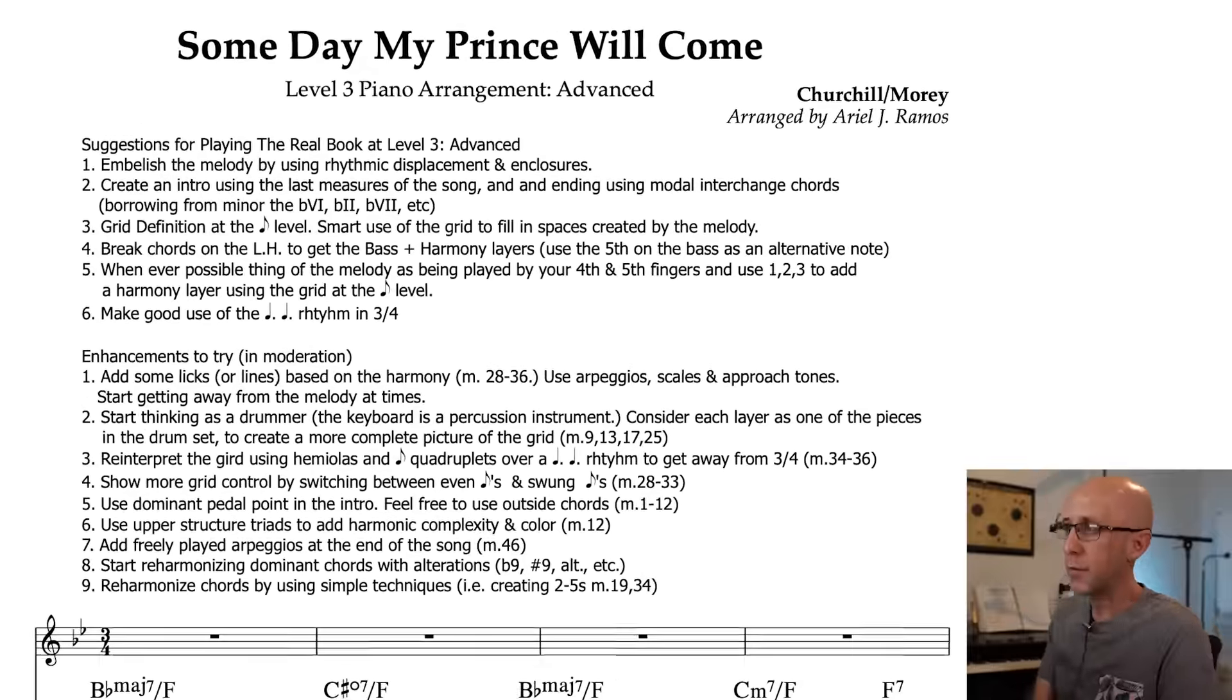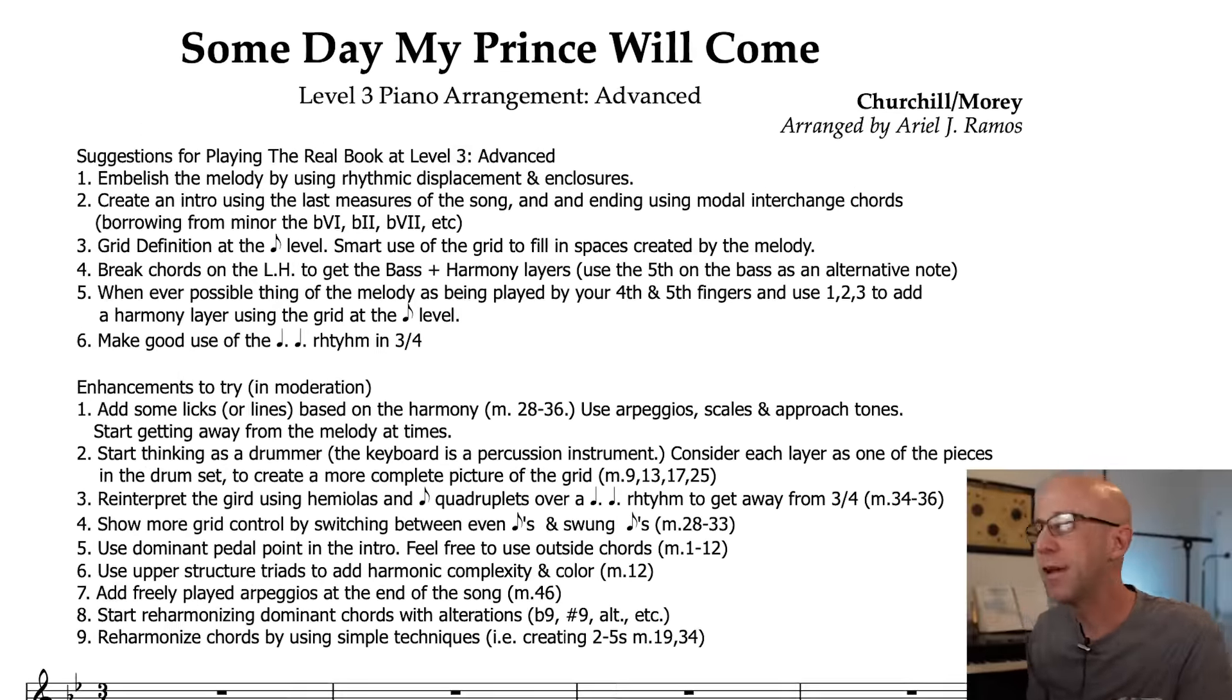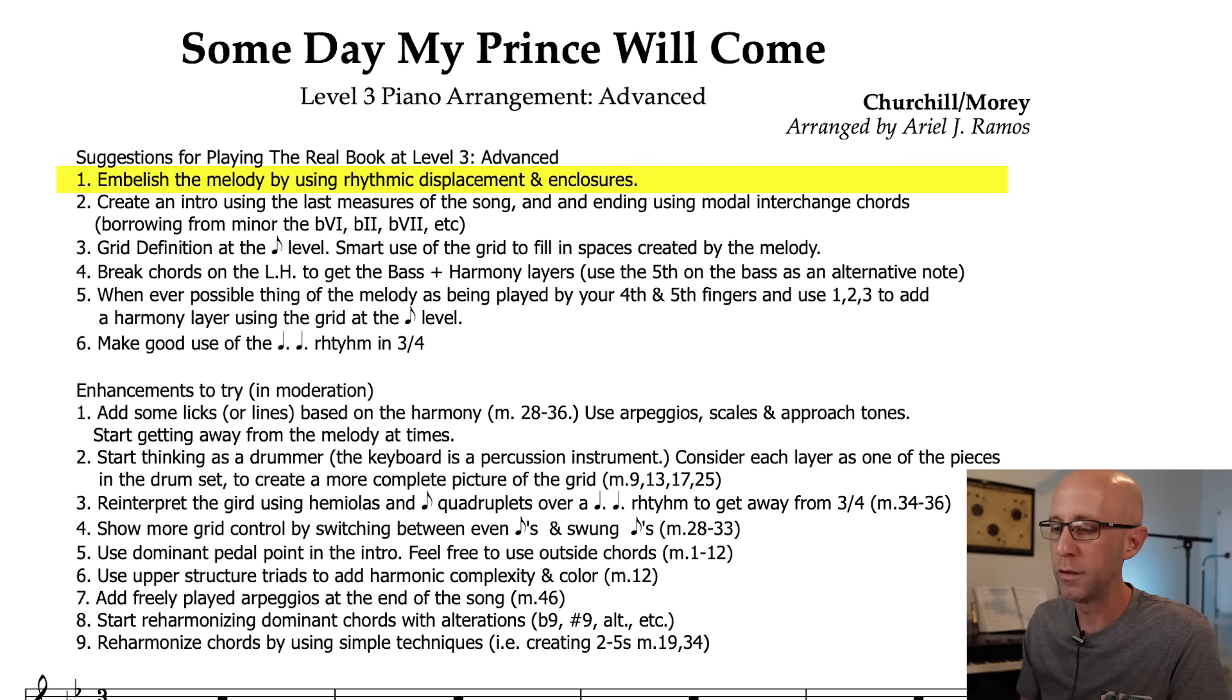As you can see at the top of the page here, we have some suggestions for playing at the level 3 level. We're going to be embellishing the melody more, you're going to maybe see some more enclosures. Again, we're still building off the techniques we used in level 1 and level 2, so you're still going to see those and some other things peppered in as well. Things like creating an intro and an outro, and using modal interchange chords to do so. We're going to further define our rhythmic grid down to more of an eighth note subdivision. Last time we talked about using more of a quarter note pulse to define our grid. Now you're going to see that kind of ramped up to an eighth note sort of level.